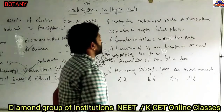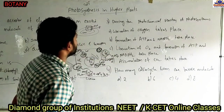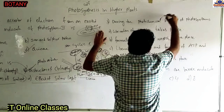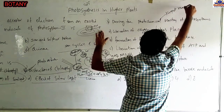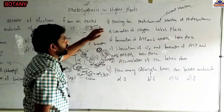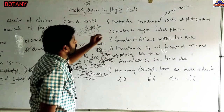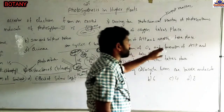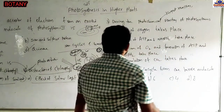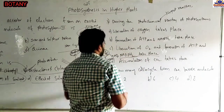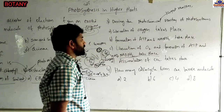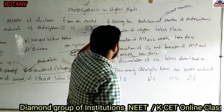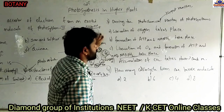Next question: During the photochemical reaction of photosynthesis — the photochemical reaction is also called the light reaction. In the light reaction, what takes place? Option A: liberation of oxygen. Option B: formation of ATP molecules and NADPH2. Option C: liberation of oxygen and formation of ATP. Option D: formation of ATP and NADPH2 molecules. Assimilation of CO2 belongs to the dark reaction.